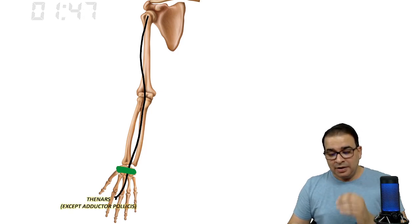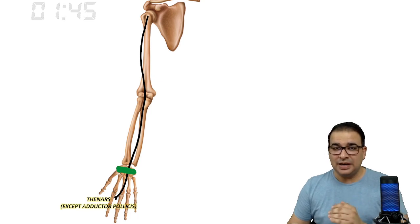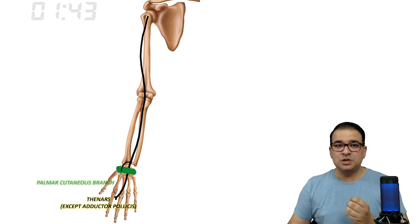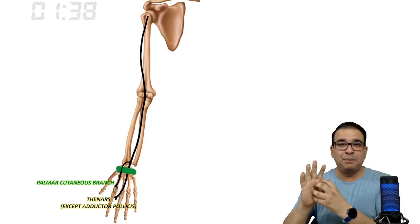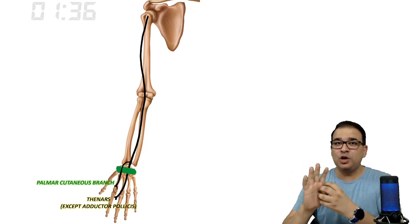Before entering deep to the flexor retinaculum, the median nerve gives off a palmar cutaneous branch that supplies the skin on the lateral 3.5 side of the palm, but not the fingers—only the palm.